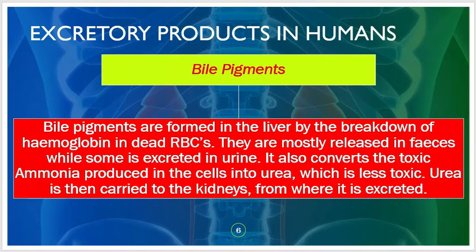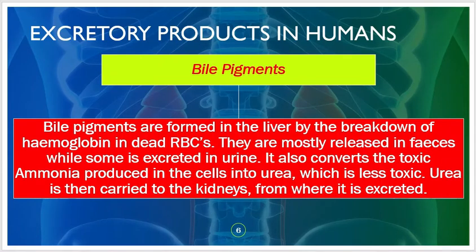Bile pigments are formed in the liver by the breakdown of hemoglobin in dead red blood cells. They are mostly released in the feces, while some is excreted in urine. The liver also converts toxic ammonia produced in the cells into urea, which is less toxic. Urea is then carried to the kidneys from where it is excreted.